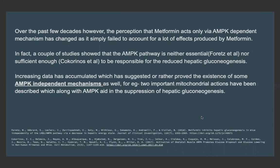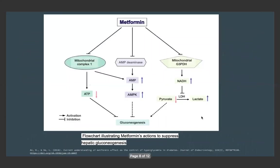For example, two important mitochondrial actions have been described alongside AMPK which help in the suppression of hepatic gluconeogenesis. This flow chart shows the conventional AMPK pathway responsible for reduced hepatic gluconeogenesis, but now we have two mitochondrial actions as well — specifically, inhibition of the mitochondrial electron transport complex and the mitochondrial target G3PDH.